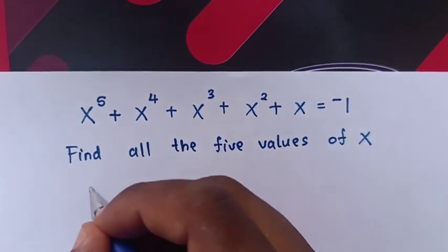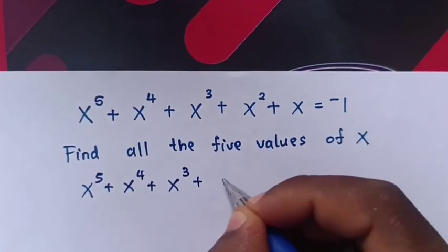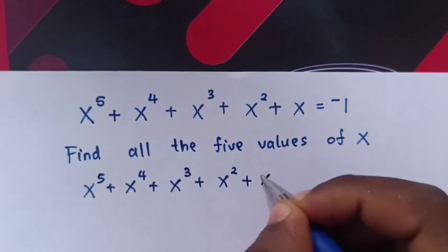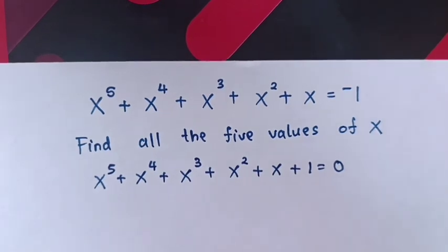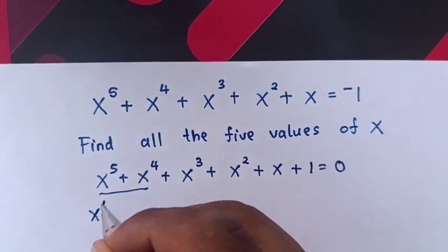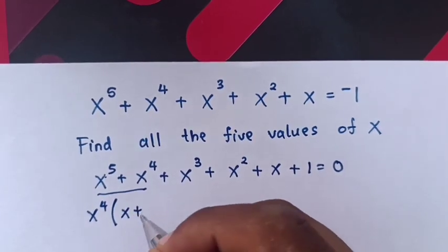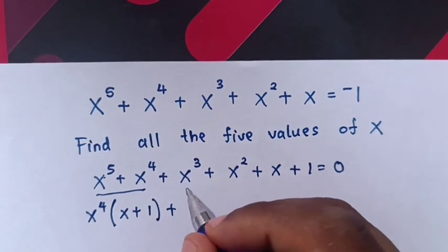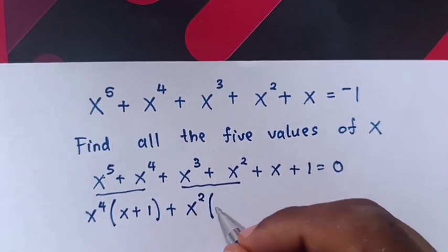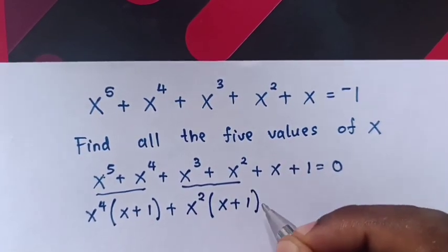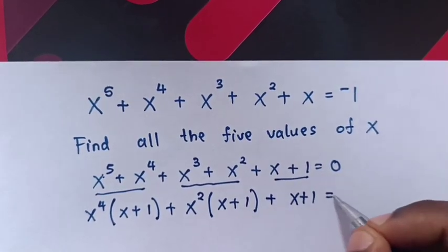First, from x⁵ + x⁴ + x³ + x² + x, this negative 1 will move to the left side to be plus 1, equals 0. From here, x⁴ is common — out of bracket this divided by this is x, plus this divided by this is 1. Plus x² is common out of bracket, this divided by this is x, plus this divided by this is 1, bracket, plus x + 1 equals 0.